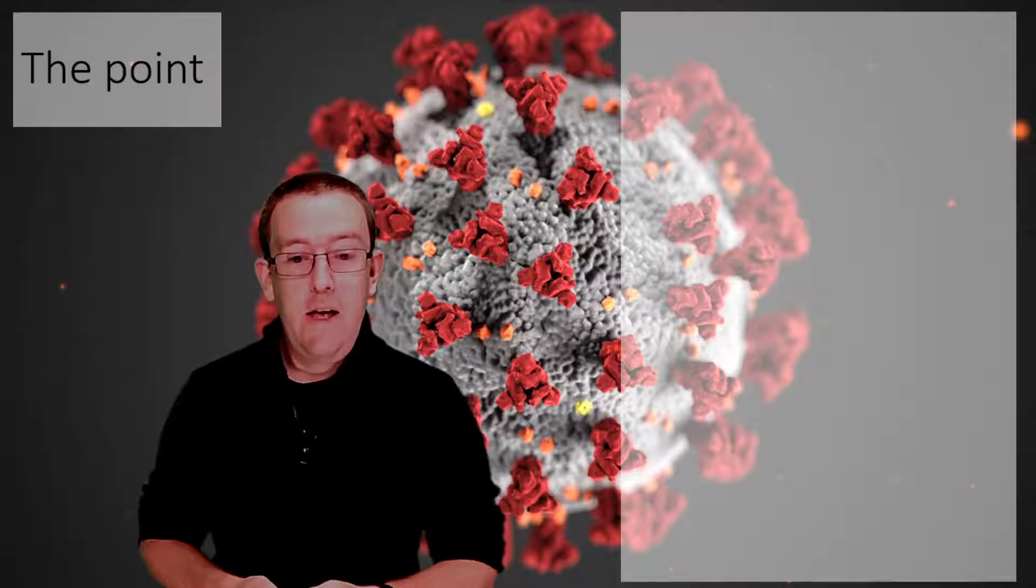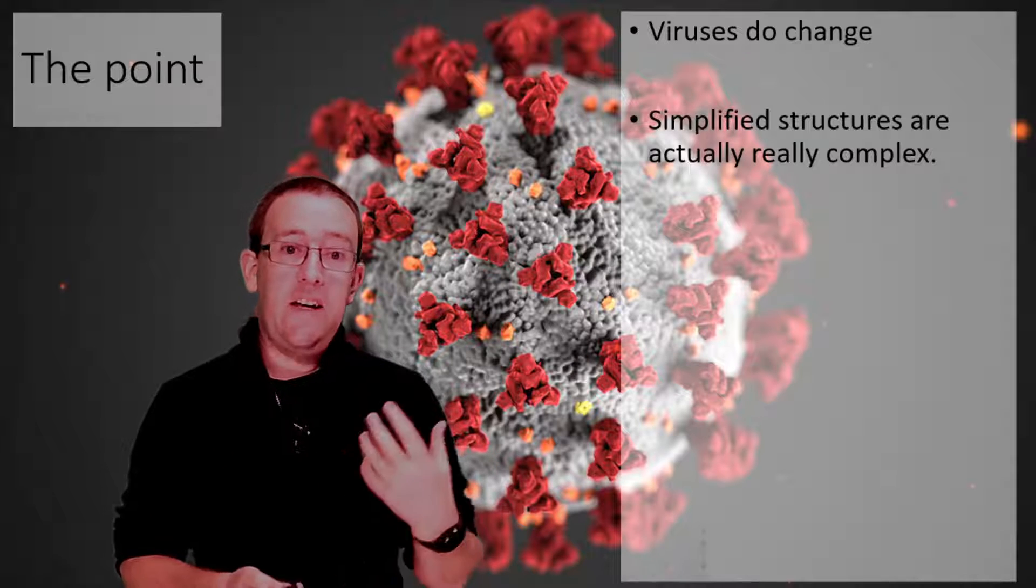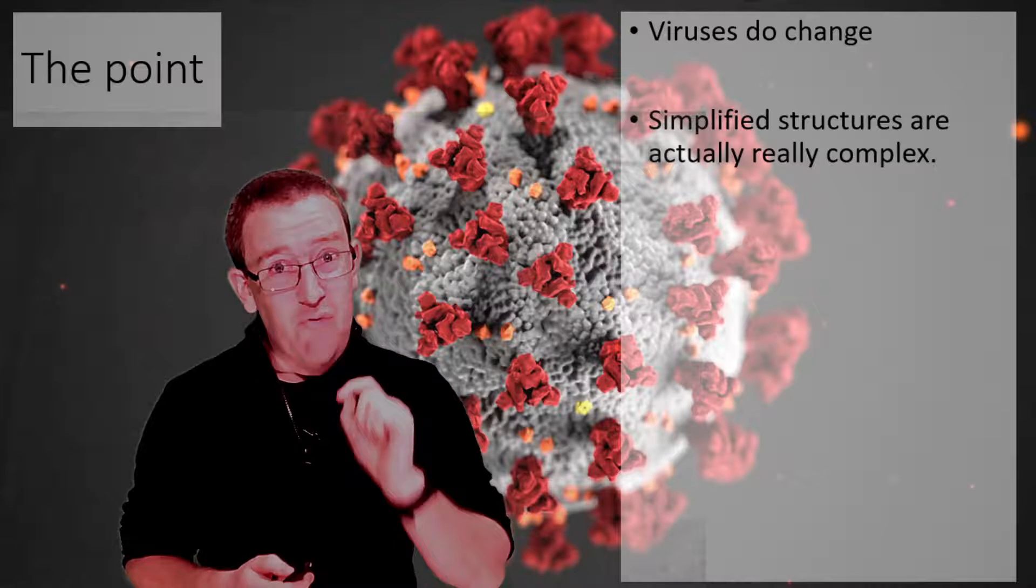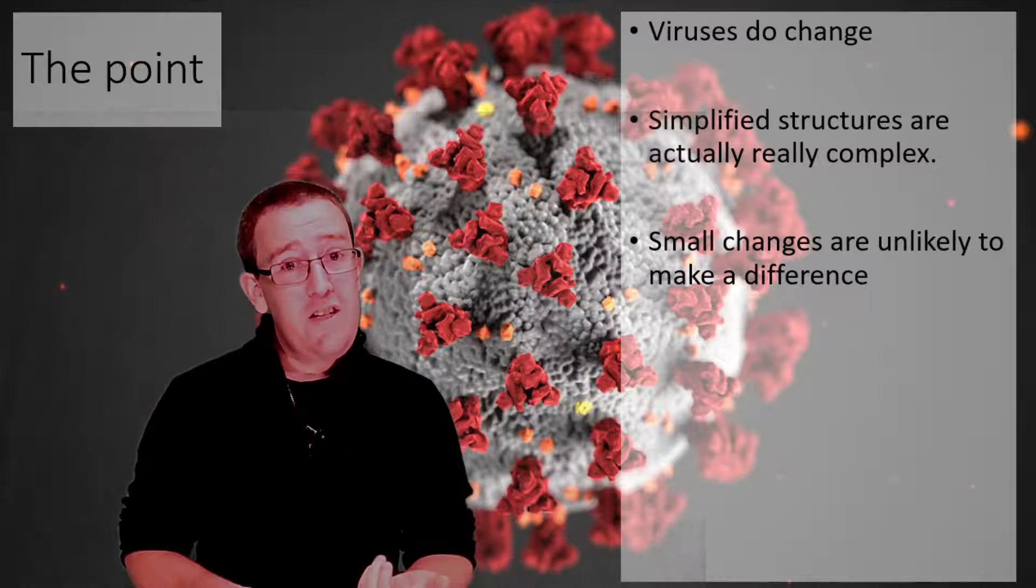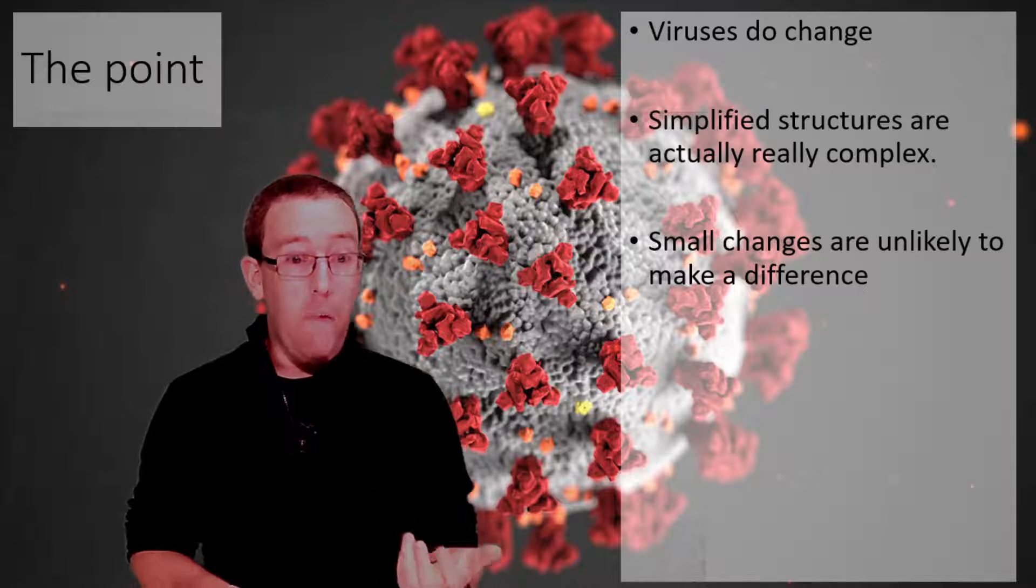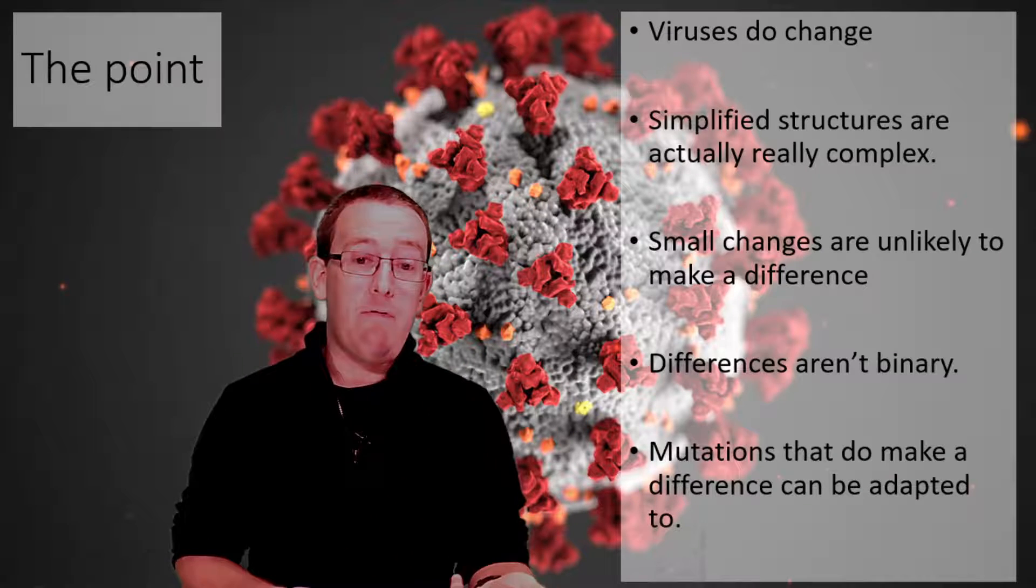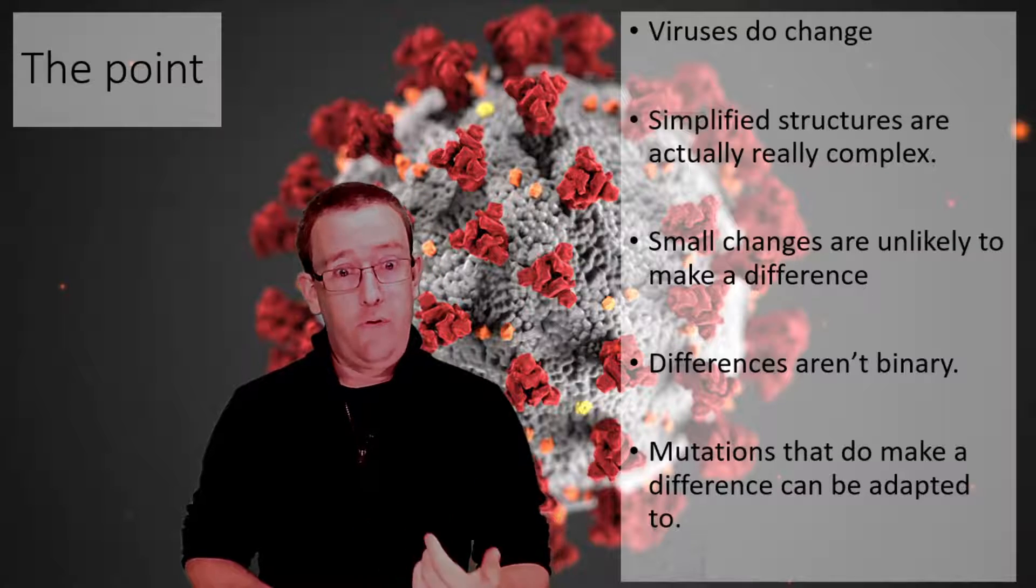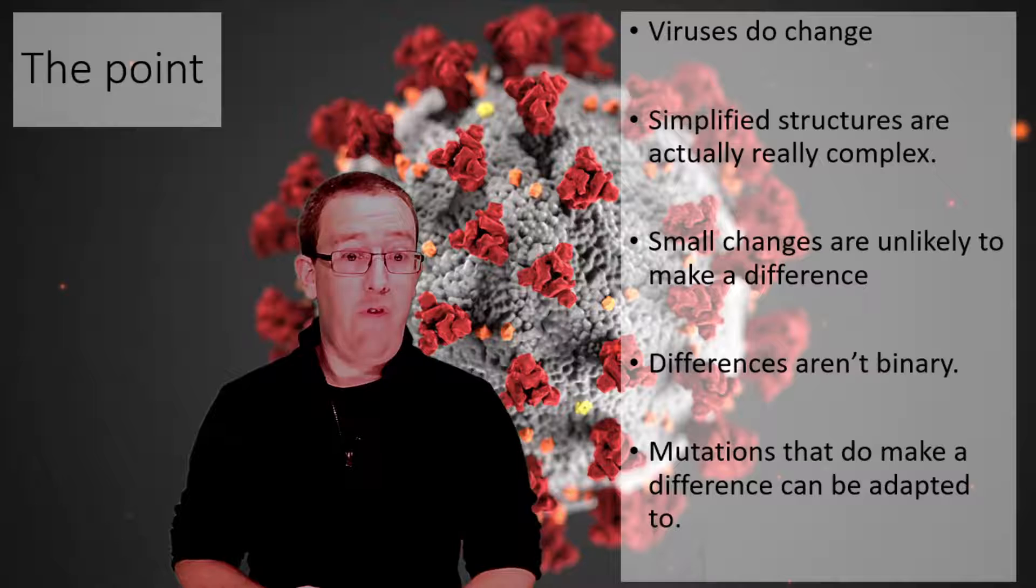The point of this video: viruses do change over time. Simplified structures in media give us the idea it could be one thing or the other, but they're actually really complicated structures. Changes can be minor with no effect. Small changes are unlikely to make much difference, and that difference won't be binary. Mutations that do make a difference can be adapted to - Oxford labs are already manufacturing new vaccine updates for new variants.